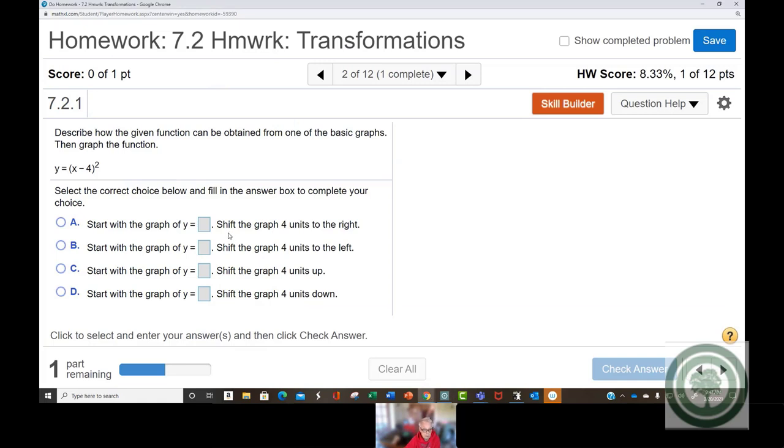So, my basic graph is x squared, and I'm going 4 units to the right. Now, I just have to find that. Shift the graph 4 units to the right. Okay.